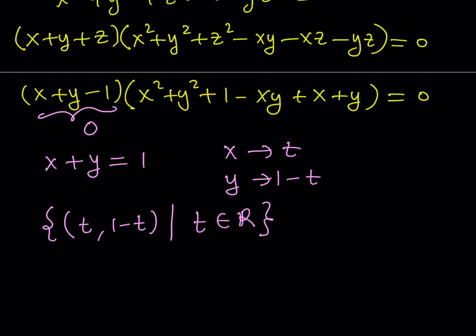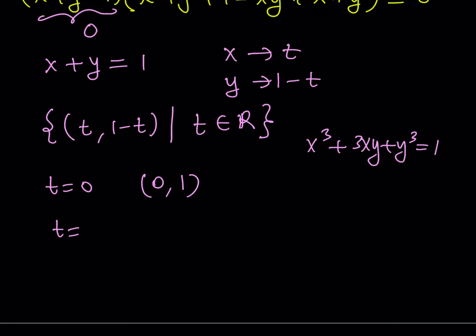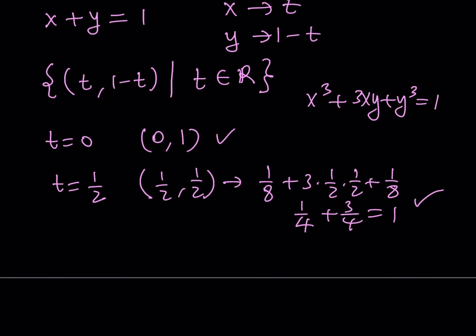So you can write your solution set as the set of ordered pairs t comma 1 minus t such that t is a real number. So if t is any real number this will become a solution. For example if t is equal to 0 then you're going to get 0 comma 1 as a solution. And if you plug it in you're going to notice that it's going to be a solution of the original problem. And what happens if t is equal to 1 half then you're going to get 1 half comma 1 half. This is kind of interesting because in this case x and y are equal. Obviously when you do this you're going to get 1 eighth plus 3 times 1 half times 1 half plus 1 eighth, and that's going to be 1 half plus 1 fourth which is 3 fourths and their sum is going to be 1.